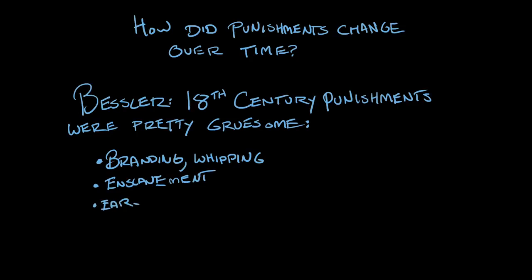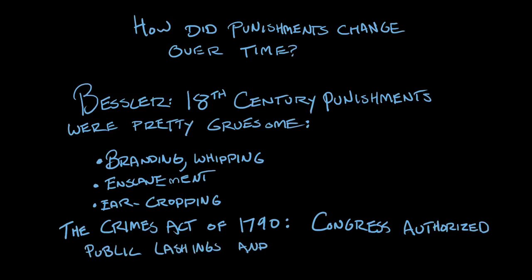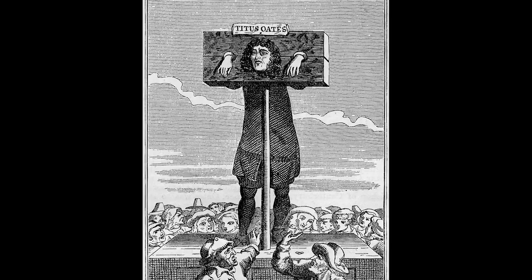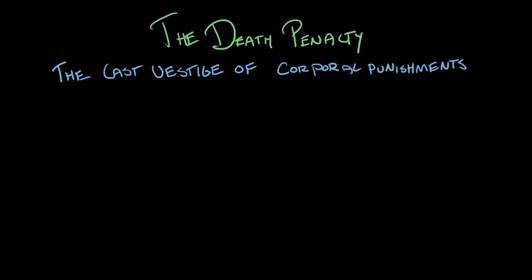In the Crimes Act of 1790 — passed just the year before the ratification of the Eighth Amendment — Congress actually authorized public whipping, lashing of people, and also authorized the pillory, the same punishment that had been used against Titus Oates. So there were these non-lethal corporal punishments. Really, the death penalty is sort of the last vestige of a bodily punishment — and the Supreme Court has read the Eighth Amendment to allow the use of capital punishment.